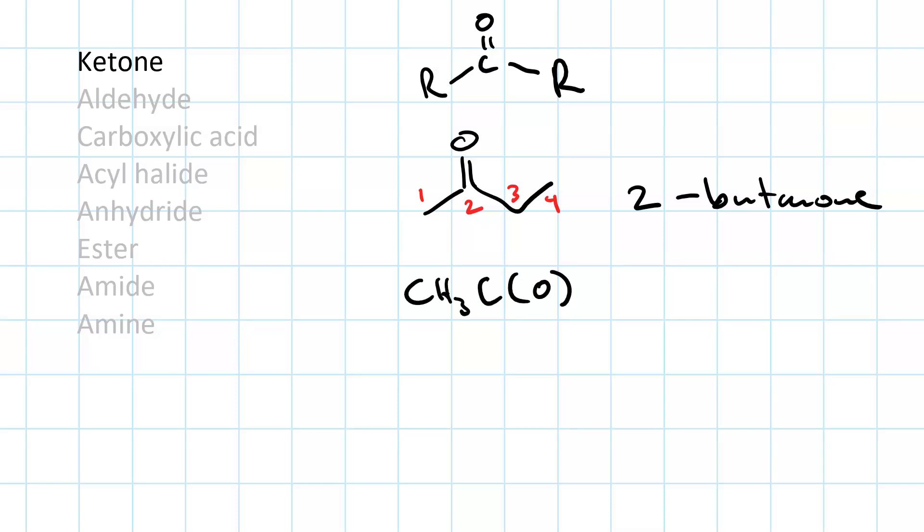A ketone contains a carbonyl carbon within the molecule. So you have R to a carbonyl, C double bond O to R. An example would be 2-butanone. And its condensed structure would be CH3, C parenthesis O, CH2 is carbon number 3, and CH3 is carbon number 4.